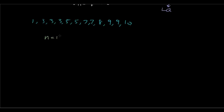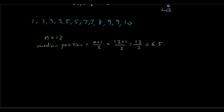So n is equal to twelve. Now the median position is n plus one over two, which is twelve plus one over two, which is thirteen over two, which is six point five. So starting from the beginning: one, two, three, four, five, six — six point five, this is my median. I'm going to find the midpoint between five and seven. So median equals five plus seven divided by two, which is six. So the median is six.